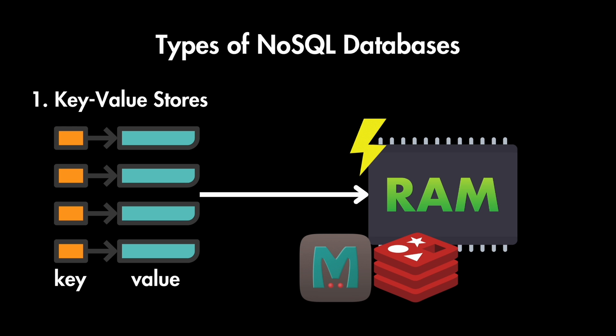We use Redis, for example, when we want to temporarily store frequently accessed data to speed up websites and applications. It works very well for caching or session data management.